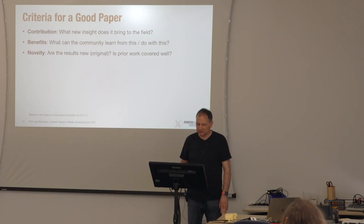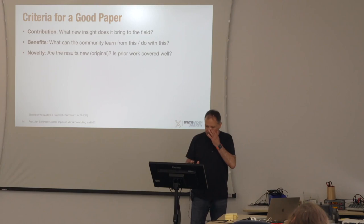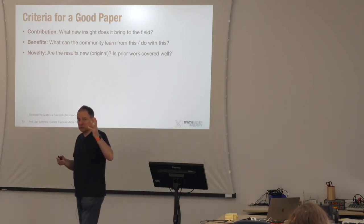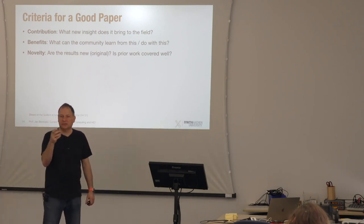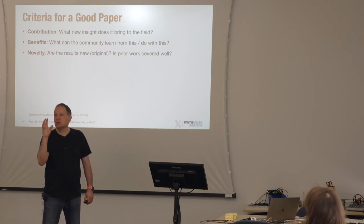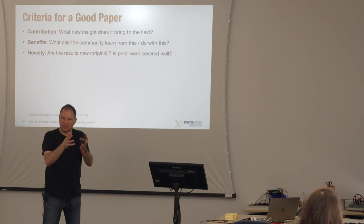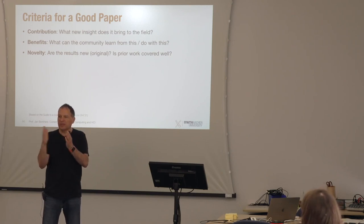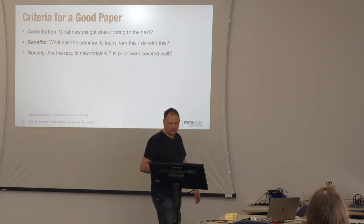Even if you cover all prior related work, reviewers might say what you're adding is too small relative to what's already known. You need to clearly explain why your work adds something important to the body of knowledge. Good related work says: here's another paper that did something similar, this was their key contribution, and here's why my work is still different — honoring the other paper's contribution while explaining why the current paper still adds value.